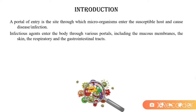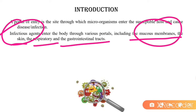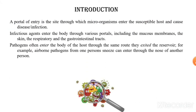Infectious agents, meaning pathogens, will enter inside the human body by many ways — for example, mucous membranes, skin, and the respiratory and gastrointestinal tracts. Pathogens often enter the body of the host through the same route they exited the reservoir. For example, airborne pathogens from one person's nose can enter through the nose of another person.